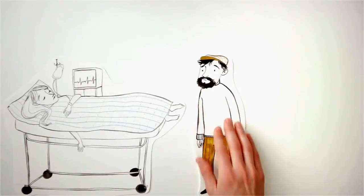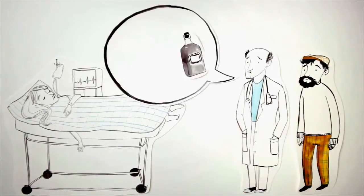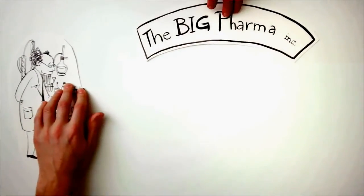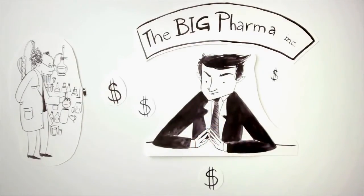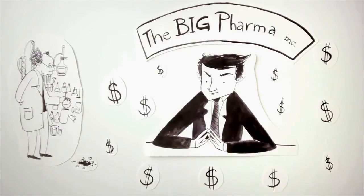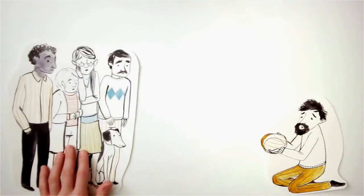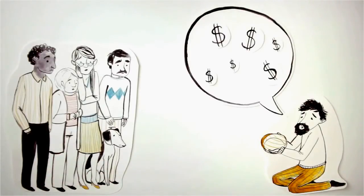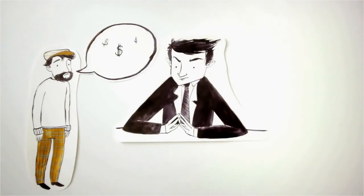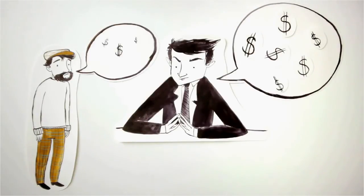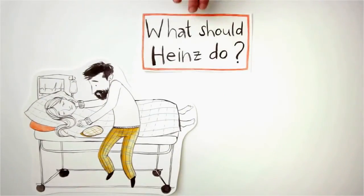Heinz's wife is dying due to a special kind of cancer. There is only one drug which the doctors think might save her — a new formula which a pharmaceutical company in the same town has recently discovered. The drug is very expensive to produce, but the pharmaceutical company is charging ten times the price. Heinz goes to all his family and friends to borrow the money, but he can only collect half of what the drug costs. He tells the CEO of the company that his wife is dying and asks could he sell it for less or pay at another time, but the CEO refuses. He can make no exceptions as the research had been very expensive and the company needs to return a profit. What should Heinz do?